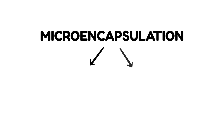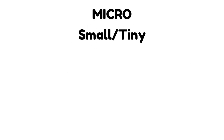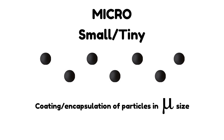To understand what microencapsulation means, you literally just have to break down the word and look at the two resulting words that come out of it: micro and encapsulation. Micro, as in there is something very tiny that is involved in this process. In this process, particles in the micron range are coated — or encapsulated — in a coat.